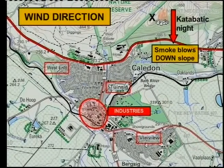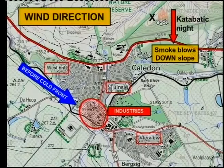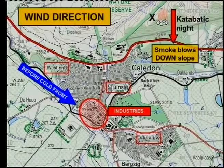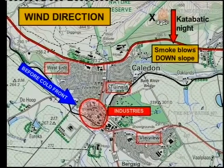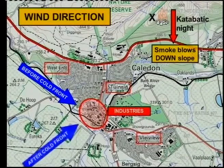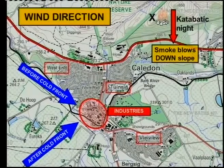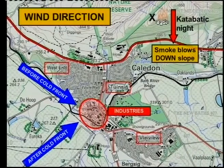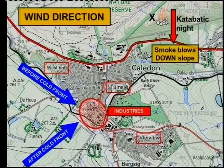What does your content say? Before a cold front, there are northwesterly winds — in other words, the wind blows from the northwest. This means before the cold front passes over Caledon, Flaview would be the residential area most affected by pollution. But after the cold front, the wind backs and changes into a southwesterly wind. This means the wind is blowing in that direction, and Tuinsug will be the residential area most affected by pollution.